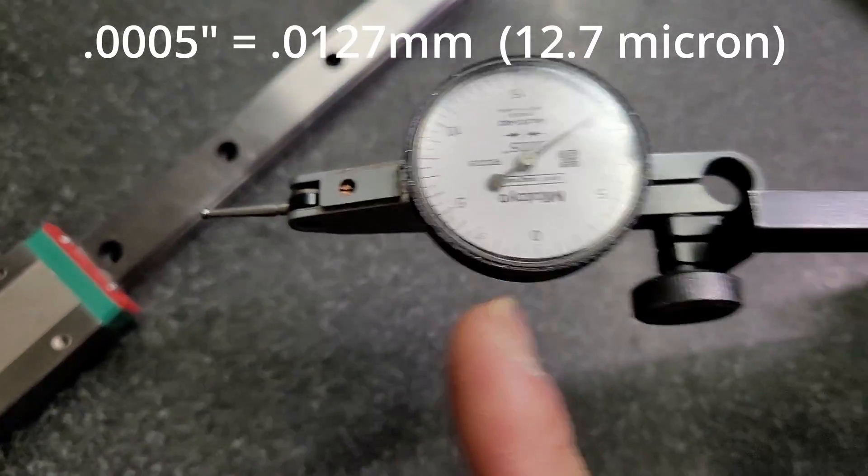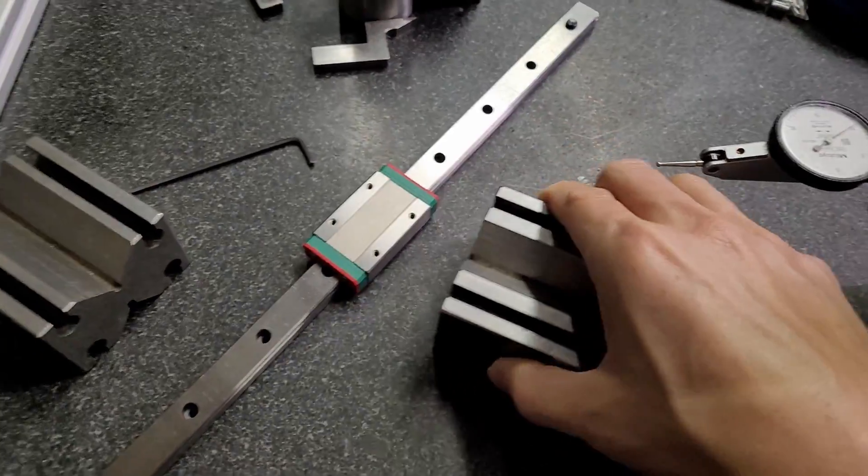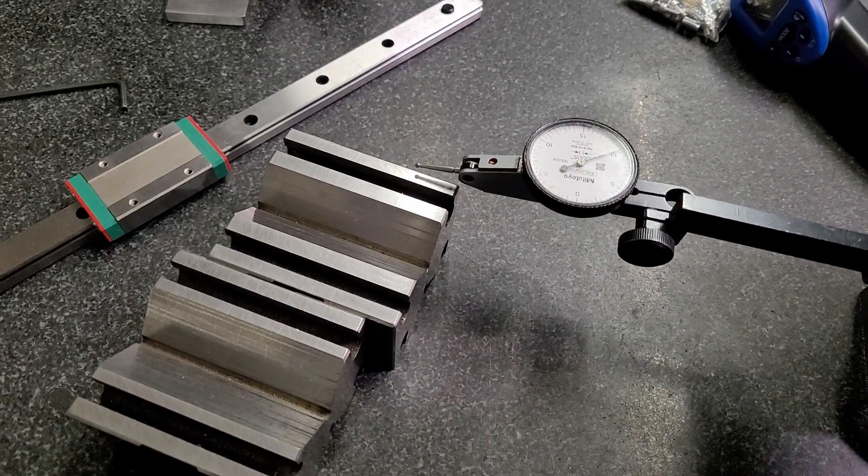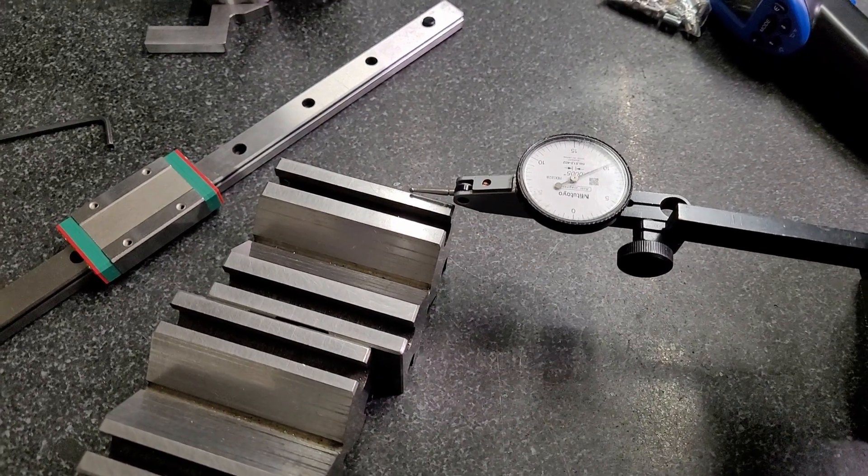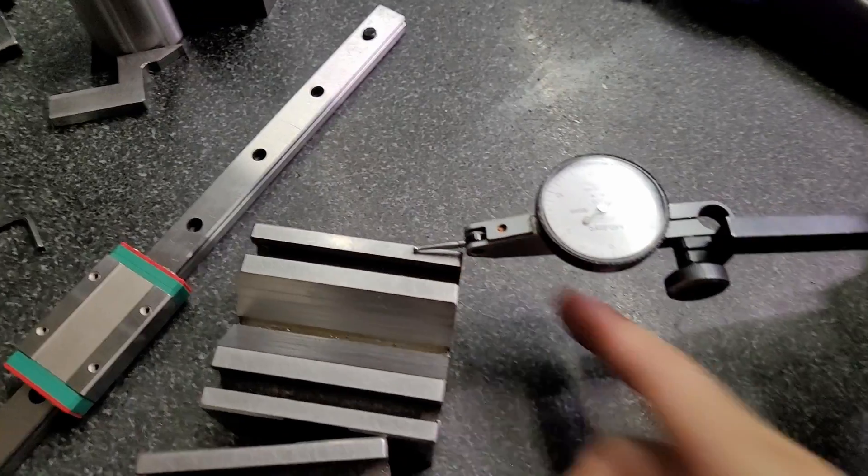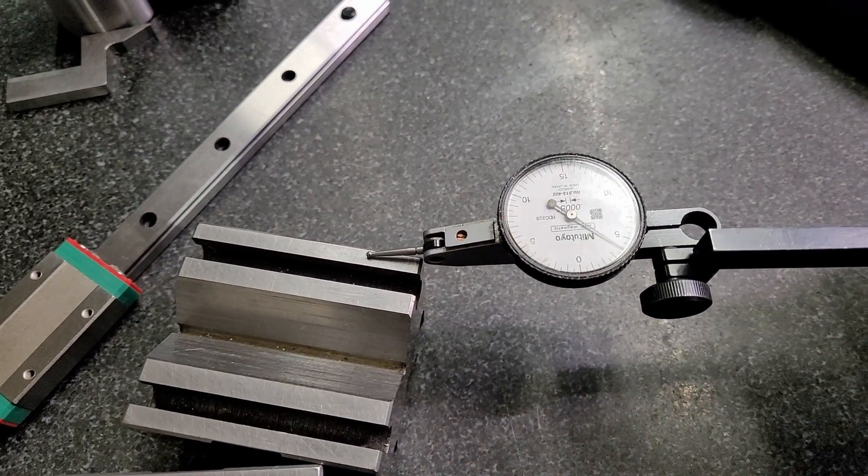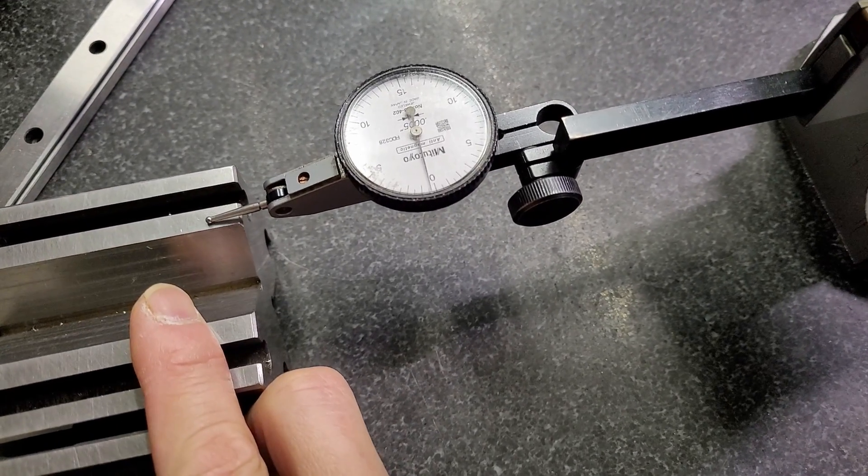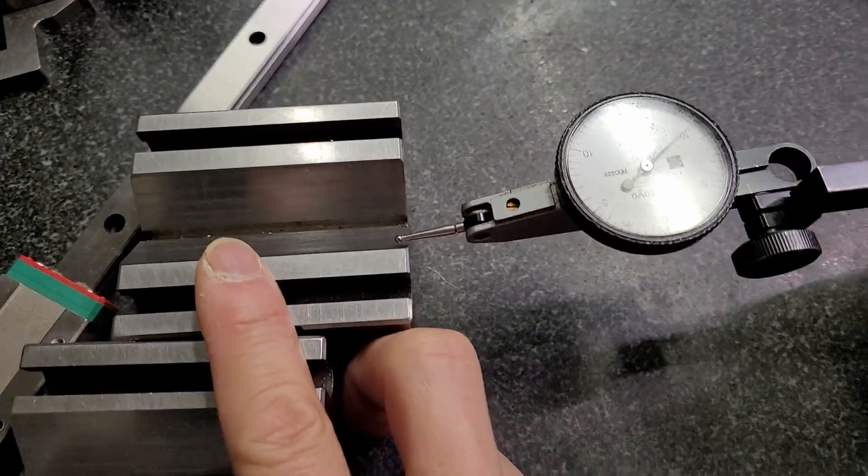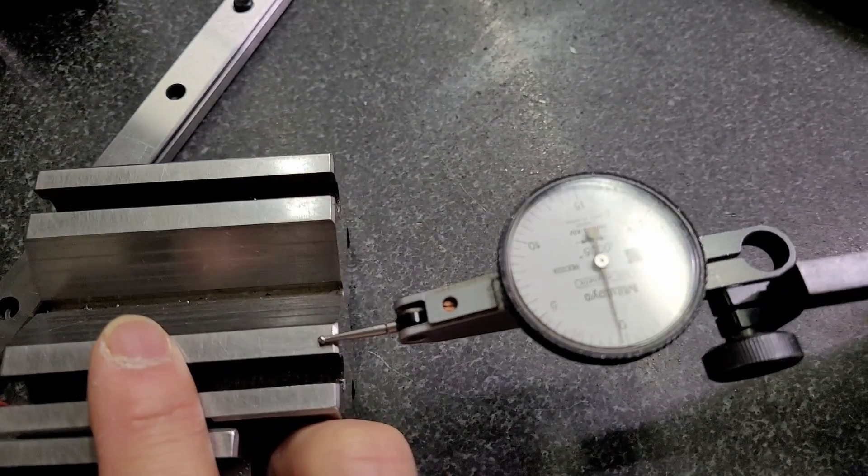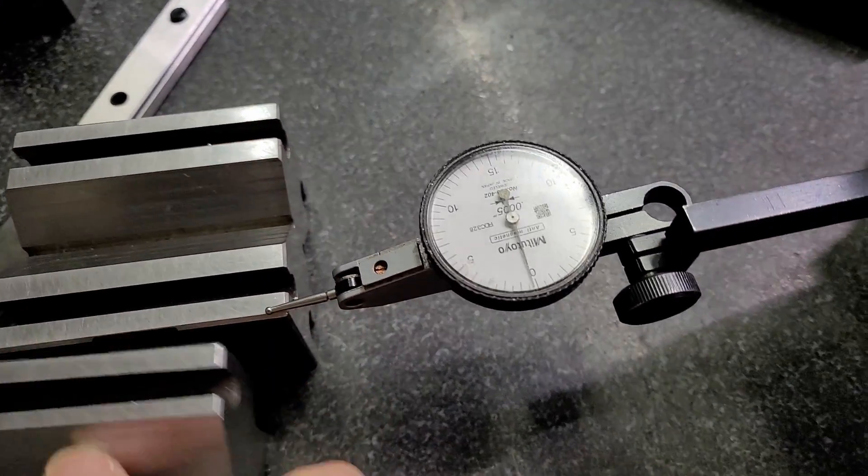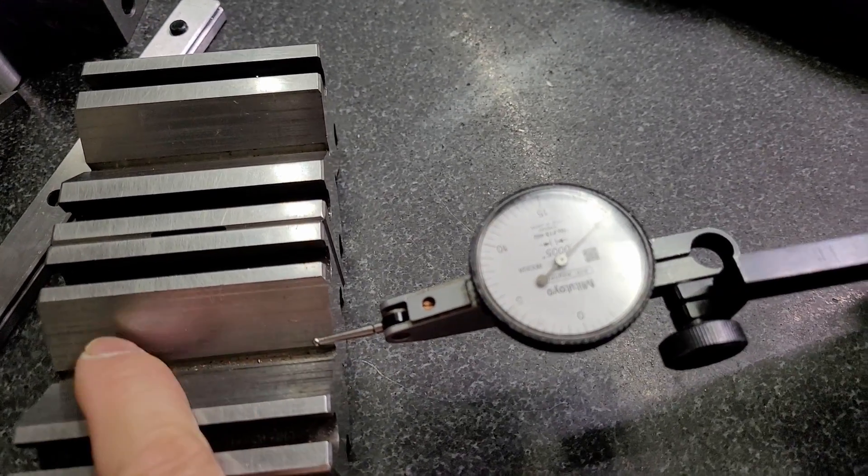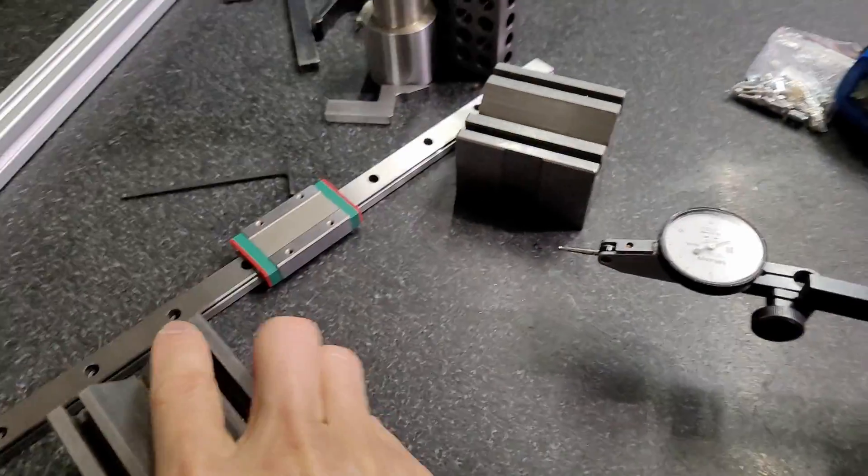What I have here are two V blocks, they call it pair V blocks, and they are pretty much the same ground V block. I'm gonna show you quickly. So right here, zero. If I run them, it should be showing zero across the ground surfaces. See, zero. I run them and zero, you see that. So they are the same height.